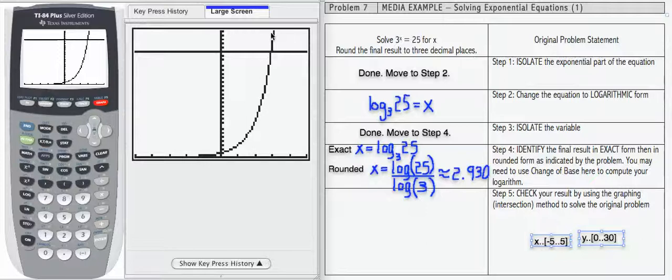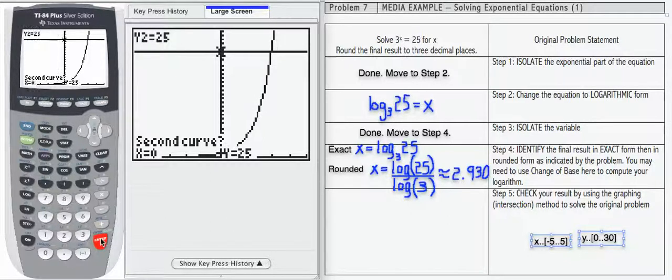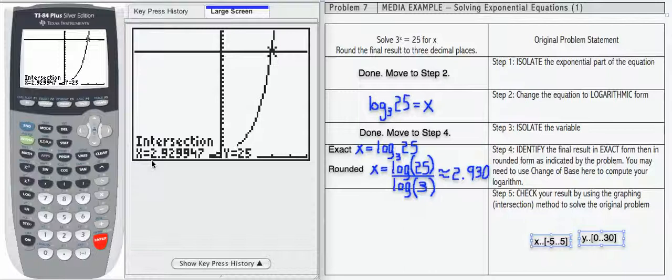Now I'm going to press graph just to be sure that my graph is going to display properly. So here's the 3 to the x. Here's the 25. If I want my intersection, I need to access 2nd calc number 5. And that should ask me a series of questions. First curve, second curve, yes, guess, kind of ignore this part and go on to my intersection, which is indeed 2.929947, which rounds to 2.930.